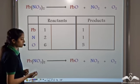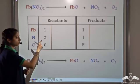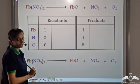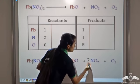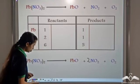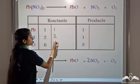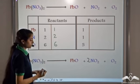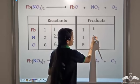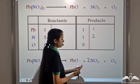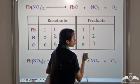We see 2 atoms of Nitrogen on the reactant side and 1 atom of Nitrogen on the product side. To balance Nitrogen, we take 2 molecules of NO₂. When we take 2 molecules of NO₂, we have not changed the reactant side. On the product side we get 1 atom of Lead, 2 atoms of Nitrogen, and 4 + 1 = 5, plus 2 = 7 atoms of Oxygen.